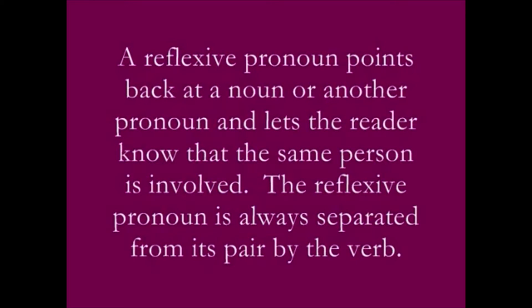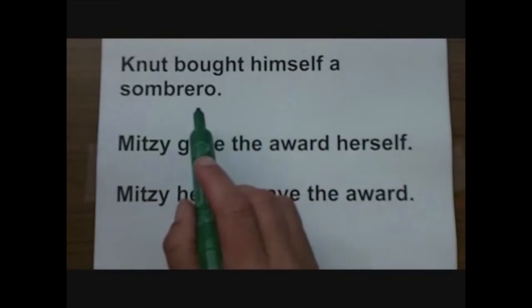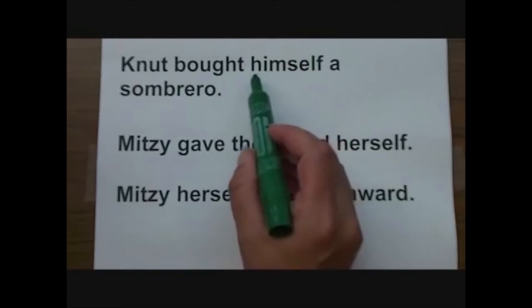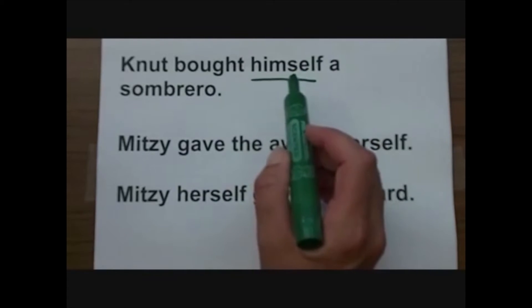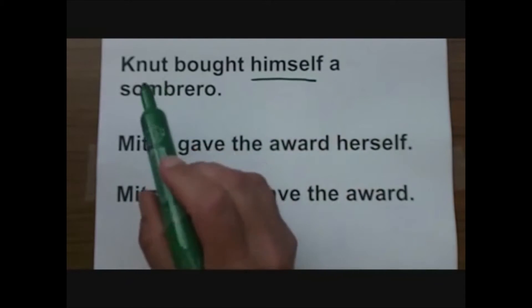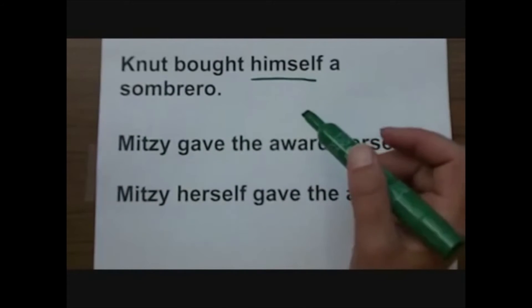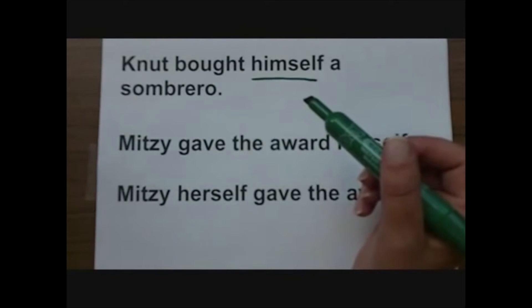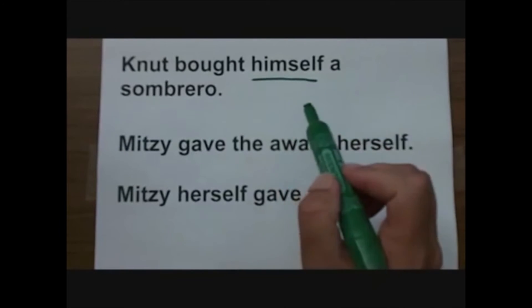A reflexive pronoun points back at a noun or another pronoun and lets the reader know that the same person is involved. The reflexive pronoun is always separated from its pair by the verb. For example: 'Canute bought himself a sombrero.' Here, 'himself' is the reflexive pronoun, indicating the sombrero Canute bought was for Canute. It would be weird to say 'Canute bought Canute a sombrero' unless there are two Canutes, which is unlikely, so we use the reflexive pronoun.